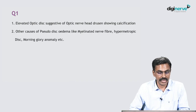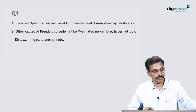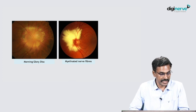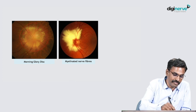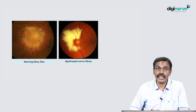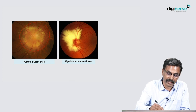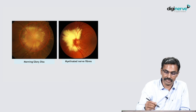The differential diagnosis — other causes of pseudopapilledema — are myelinated nerve fibers, hypermetropic disc, morning glory anomaly, et cetera. Morning glory disc resembles a morning glory flower, and myelinated nerve fibers show a feathery pattern because myelination occurs at the nerve fiber layer level.